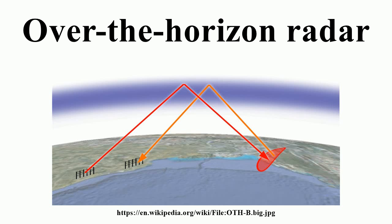Technology: Radio waves, a form of electromagnetic radiation, tend to travel in straight lines. This generally limits the detection range of radar systems to objects on their horizon due to the curvature of the Earth. For example, a radar mounted on top of a 10-meter mast has a range to the horizon of about 13 kilometers, taking into account atmospheric refraction effects. If the target is above the surface, this range will be increased accordingly, so a target 10 meters high can be detected by the same radar at 26 kilometers.